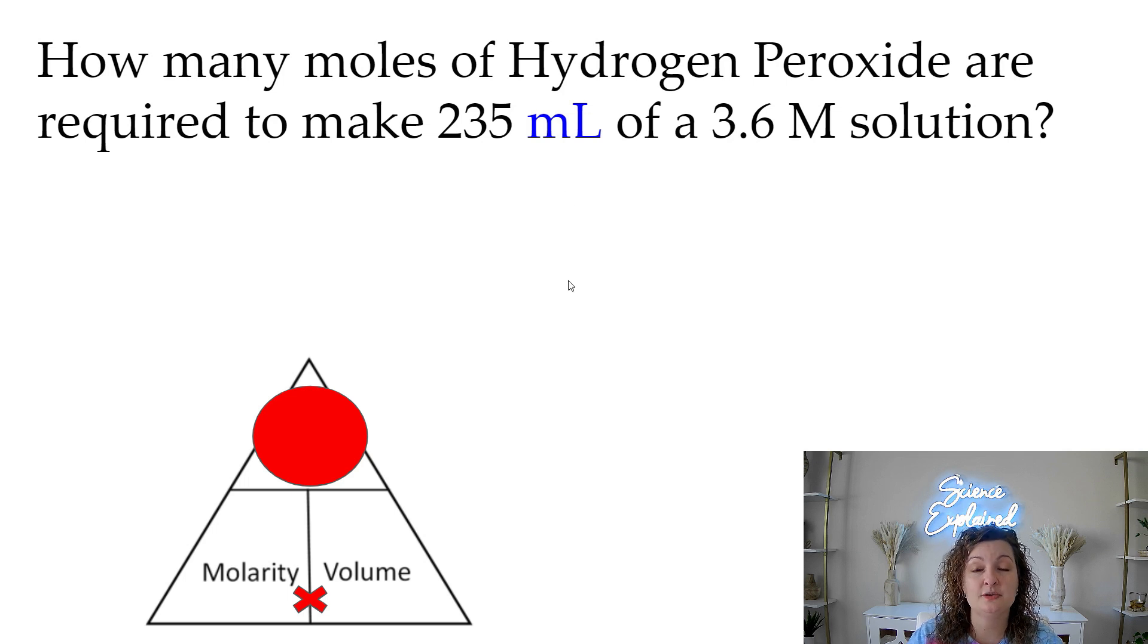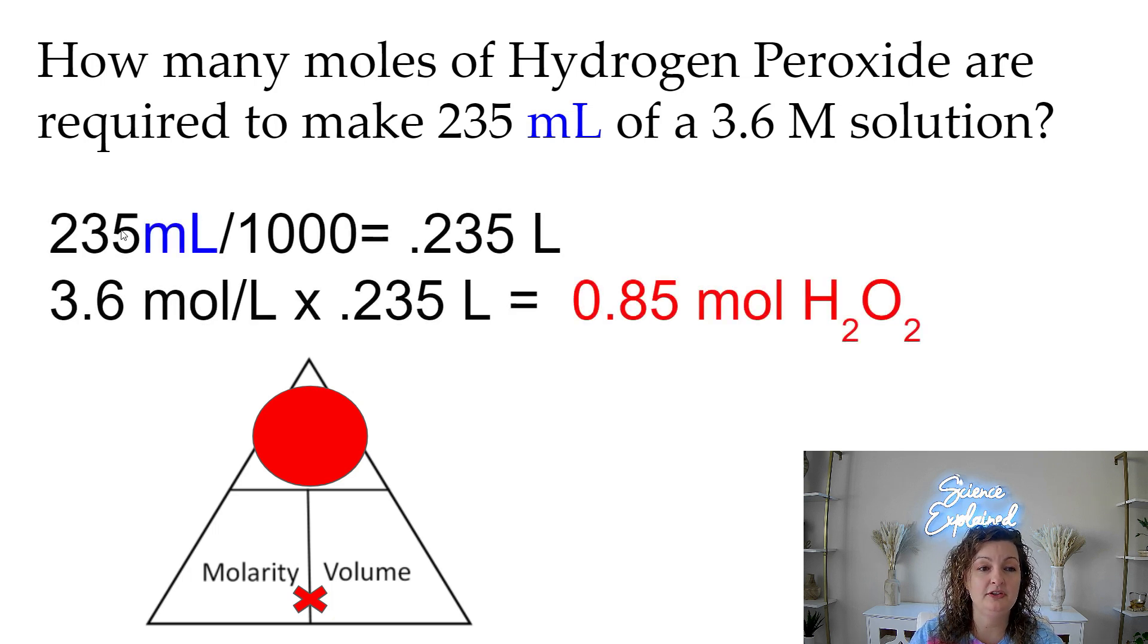I have to first convert this to a liter. I can do that by either dividing by a thousand or moving my decimal three places to the left. So I'm going to do that first. I'm going to do 235 divided by a thousand, and I end up getting 2.35 liters. Now I have it in liters.